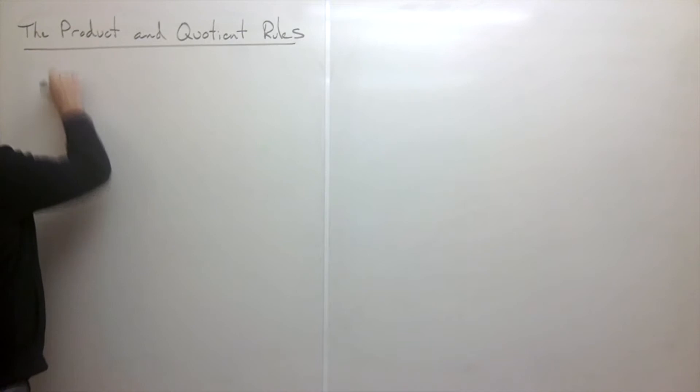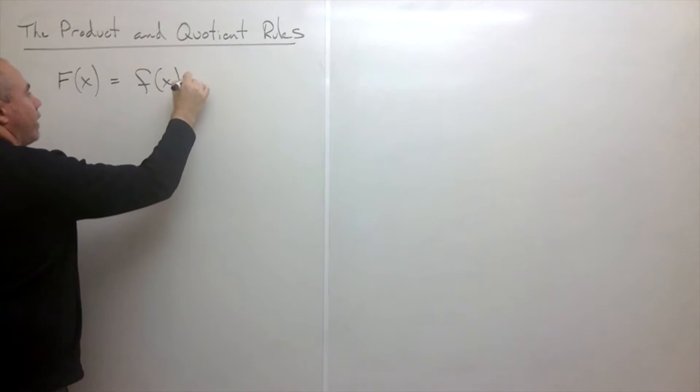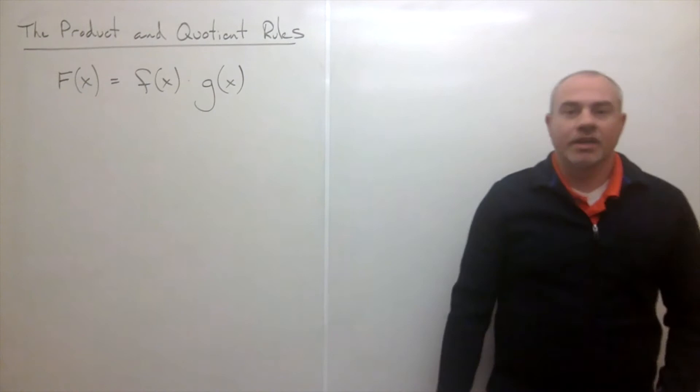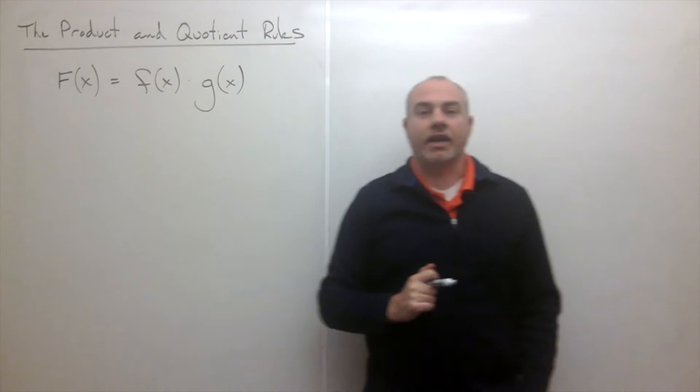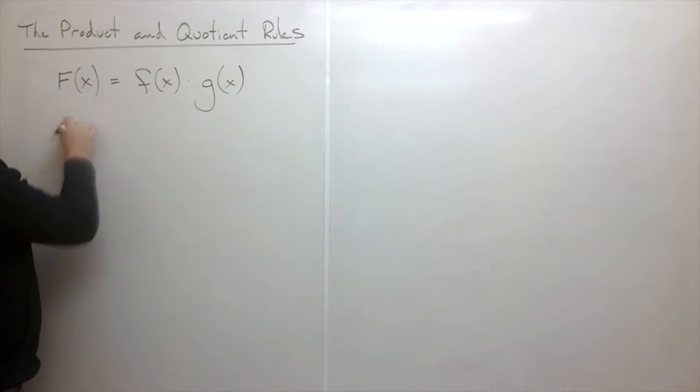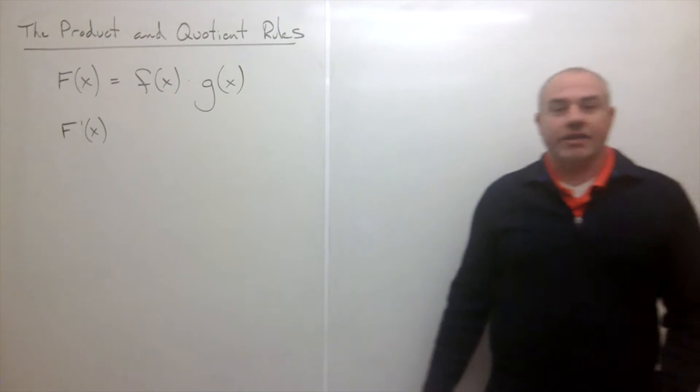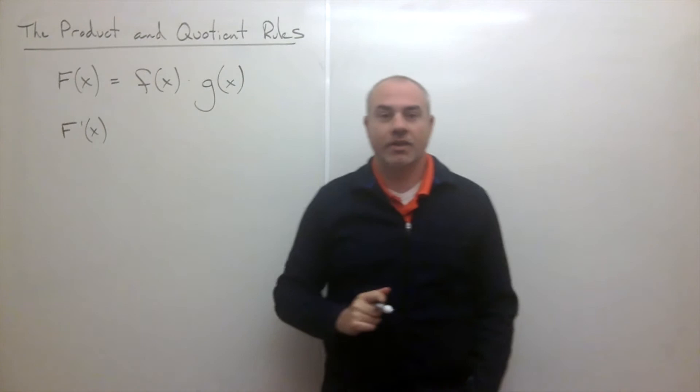I'm going to call it capital F of X, equal to some function little f of X times some function g of X. So we have a function that is a product of two functions, and I'd like to take the derivative capital F prime of X. How do you take the derivative of two functions that are multiplied together?